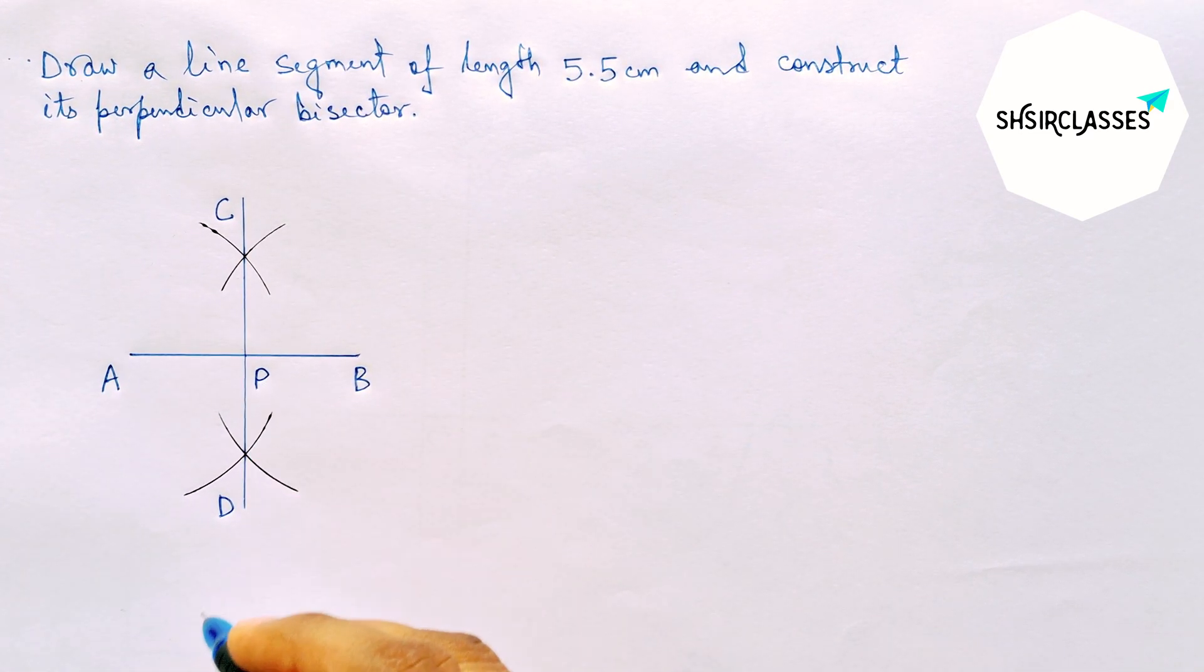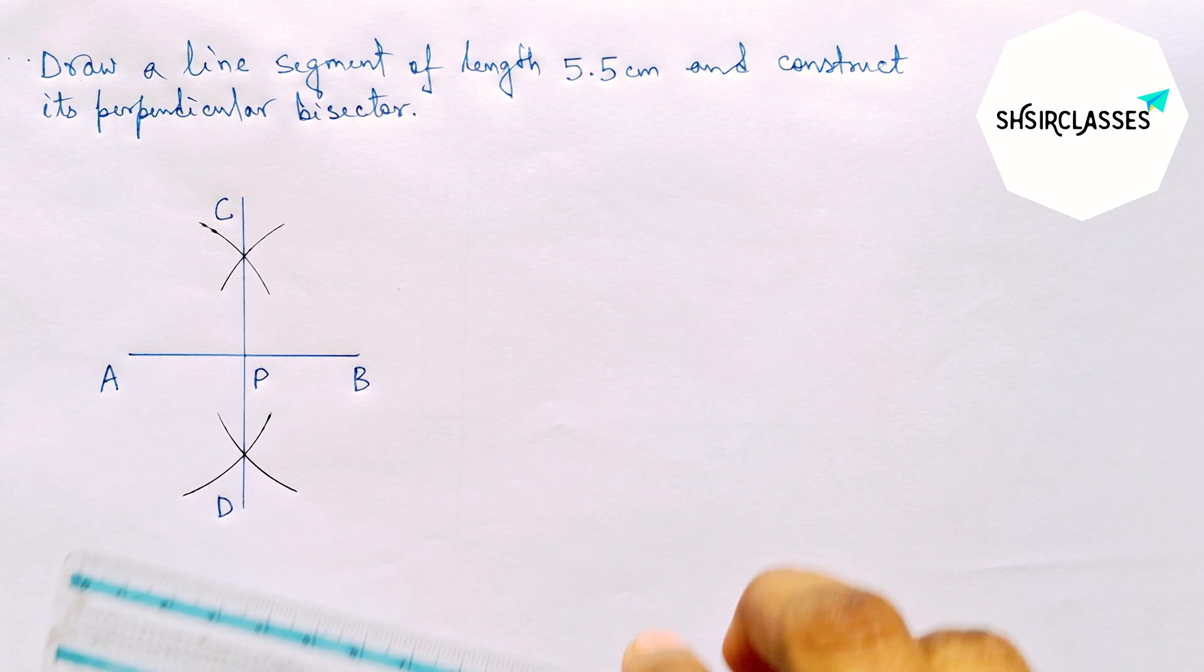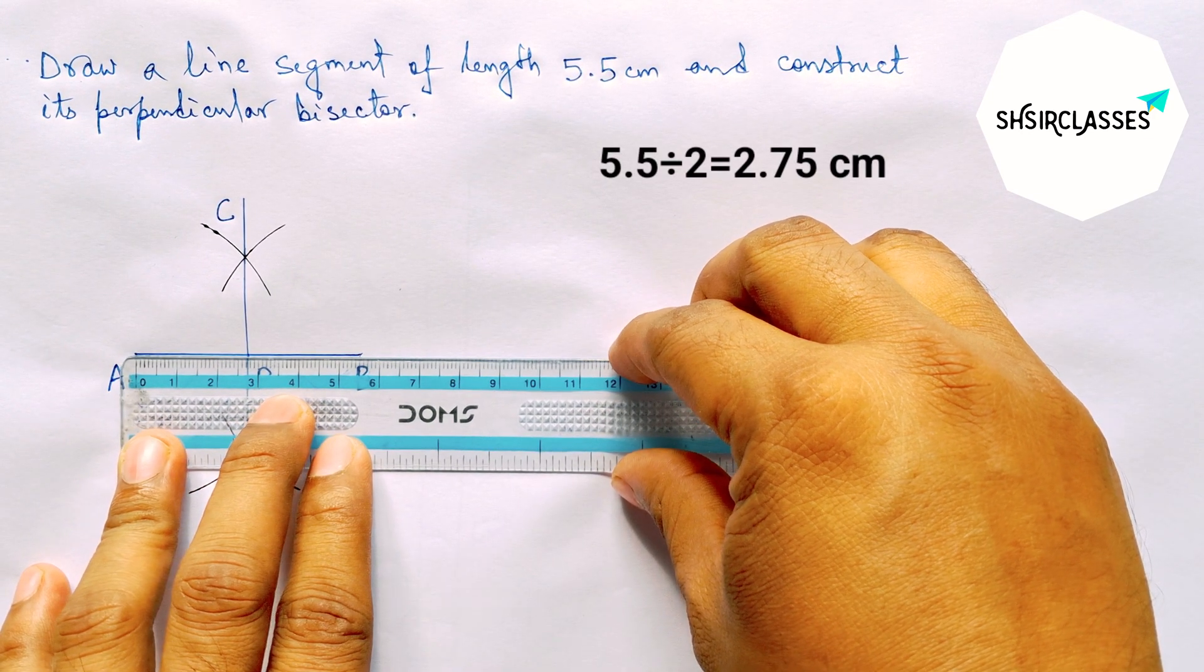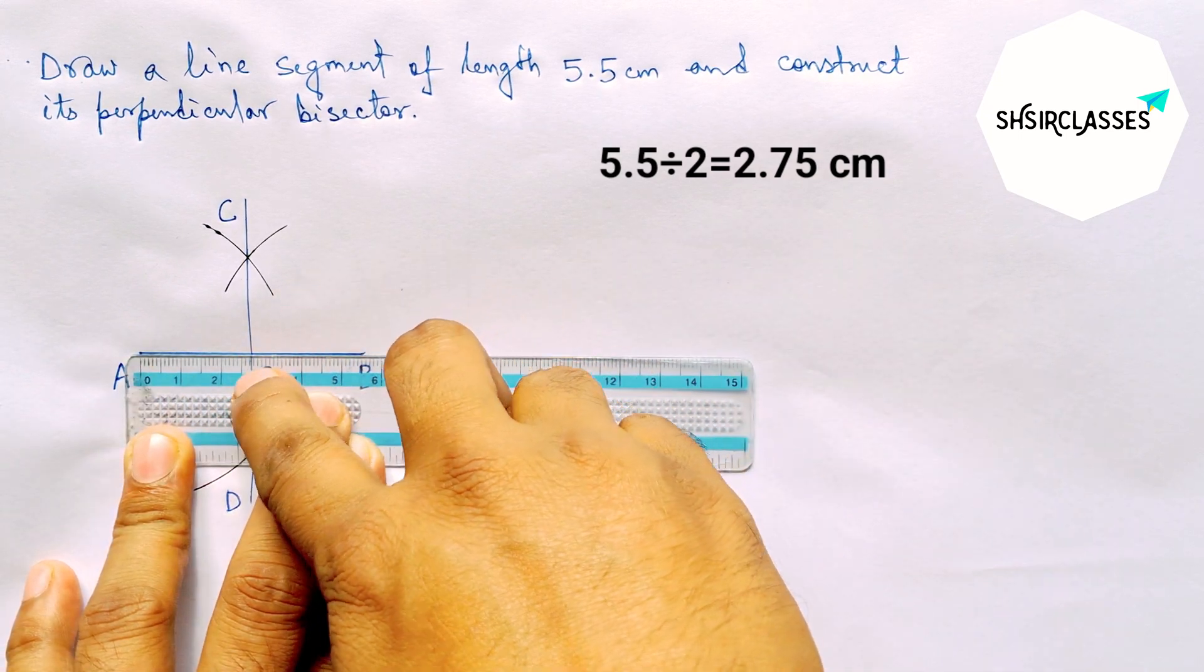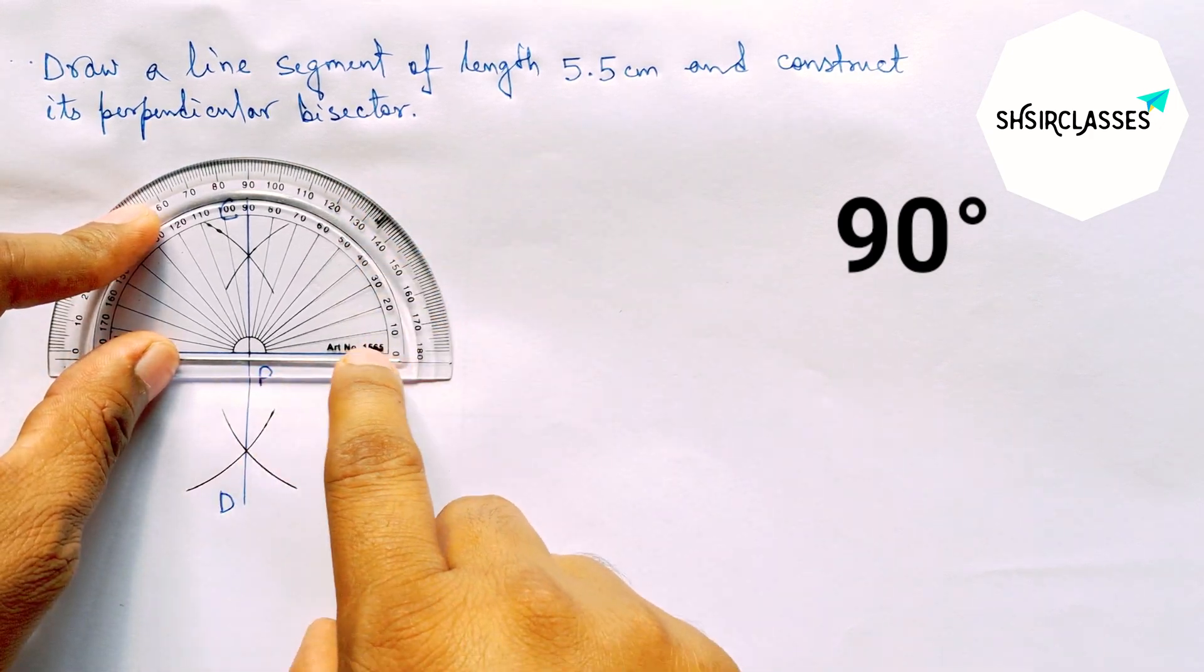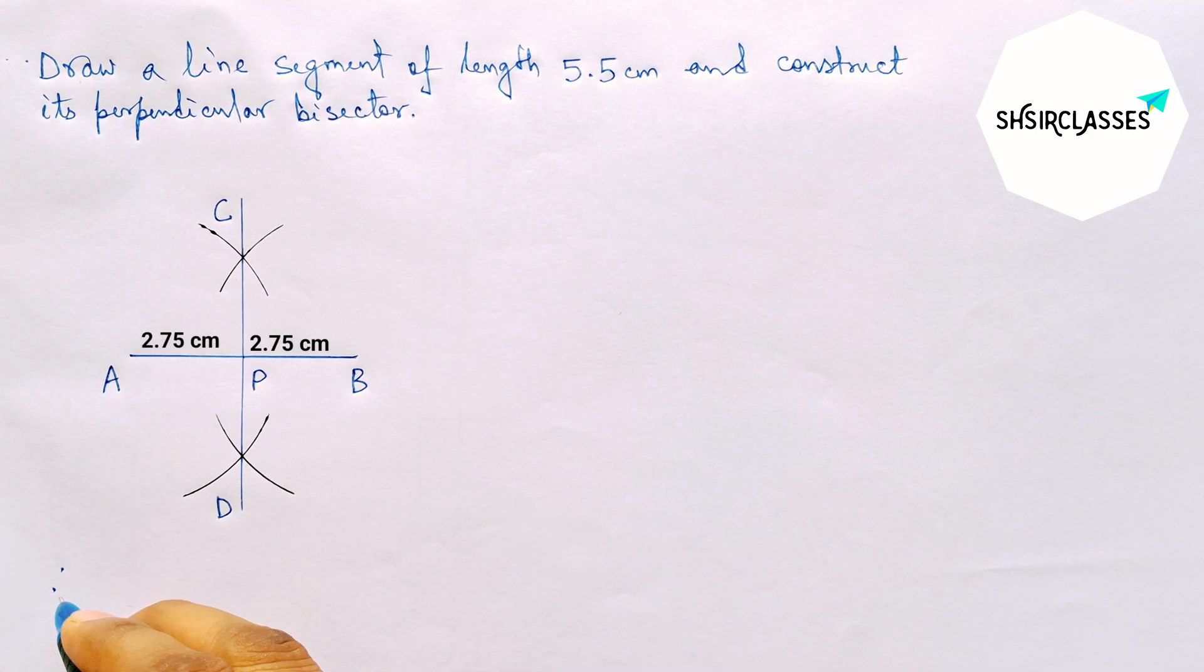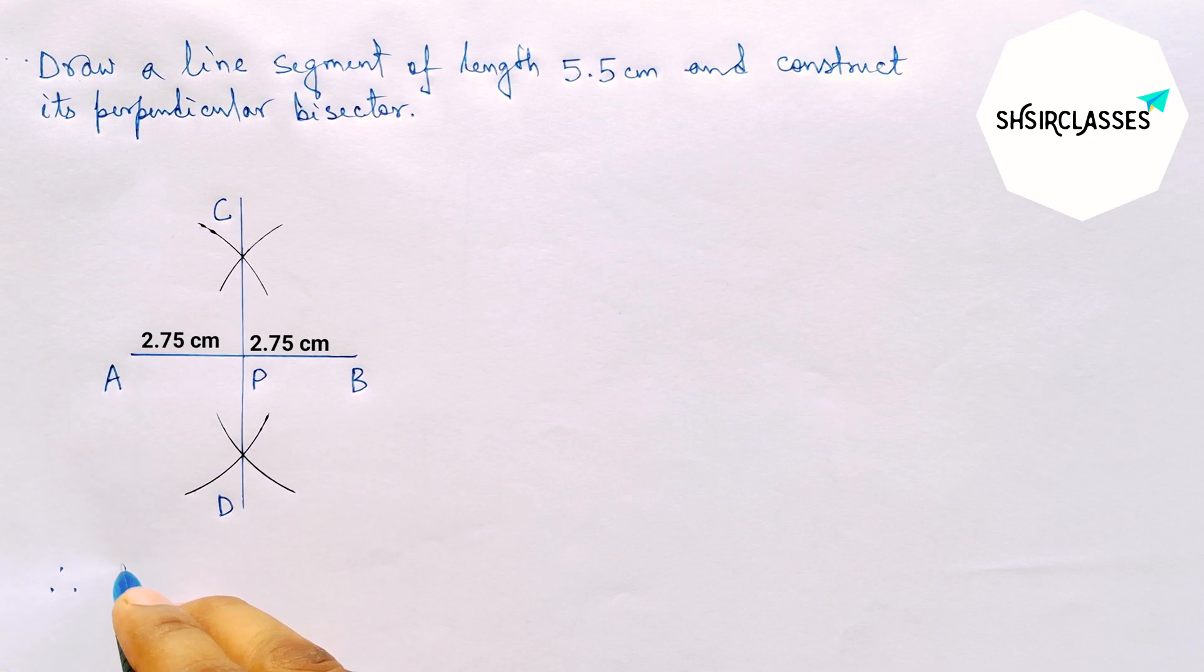Okay, now checking this whether it is bisecting perfectly or not. So this is perfectly bisecting the line AB and here angle this is 90 degrees. Okay, so therefore CD is the required perpendicular bisector to the line AB.